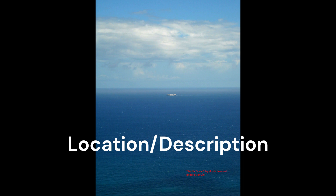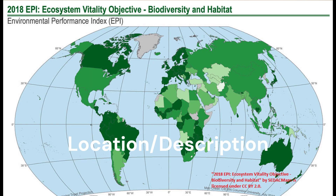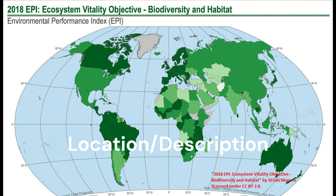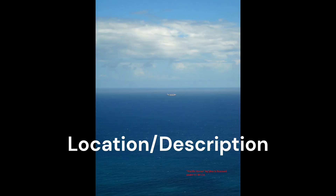The marine biome encompasses the vast bodies of saltwater on Earth, including oceans, seas, and coral reefs. It covers approximately 70% of the planet's surface and is distributed across various latitudes and longitudes. The marine biome is characterized by its diverse ecosystems, ranging from shallow coastal areas to deep ocean trenches. It is home to a multitude of plant and animal species, many of which exhibit unique adaptations to survive in this aquatic environment.